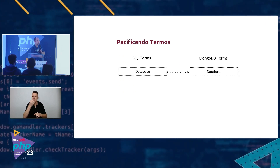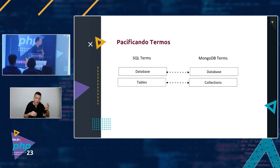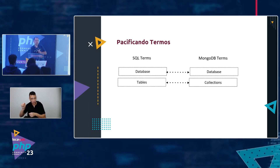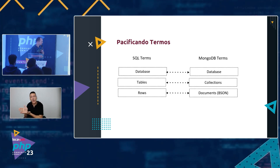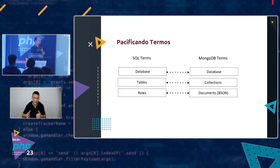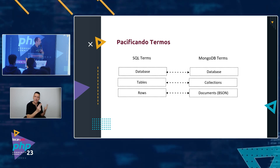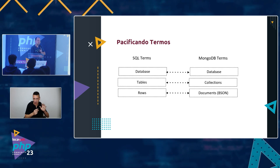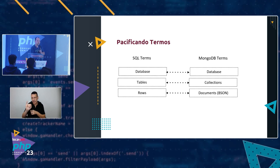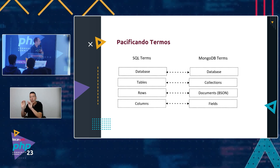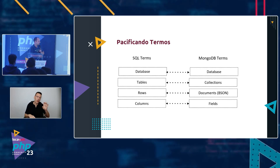Pacifying terms: 'database' in relational databases is also called 'database' in MongoDB. 'Tables' we call 'collections' — there's a technical reason for that, but basically when I say collections, you can understand them as tables. 'Rows' or 'tuples' we call 'documents' — stored in BSON (Binary JSON), which is how MongoDB stores data. And 'columns' in relational are called 'fields' in MongoDB. We'll understand more about fields towards the end.